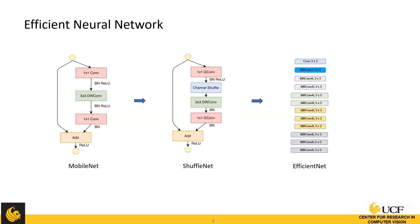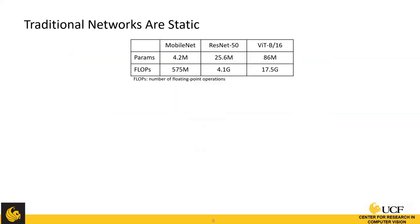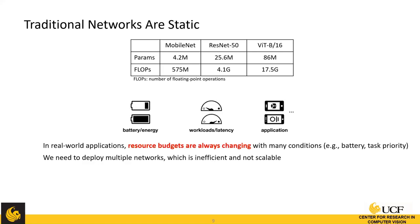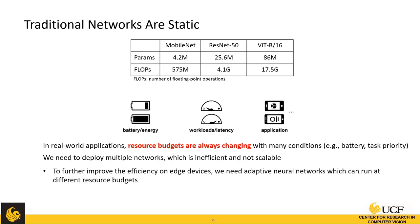However, those efficient networks still have limitations: they are static — after training, they can only run at a specific model complexity. In real applications, resource budgets are always changing. For example, on a mobile phone, when the battery is high we may run ResNet-50, but when the battery is low we may only run MobileNet. To meet these dynamic resource budgets, we'd have to deploy multiple networks, which is inefficient and not scalable. That's why we need adaptive networks — one network that can run at different resource budgets.